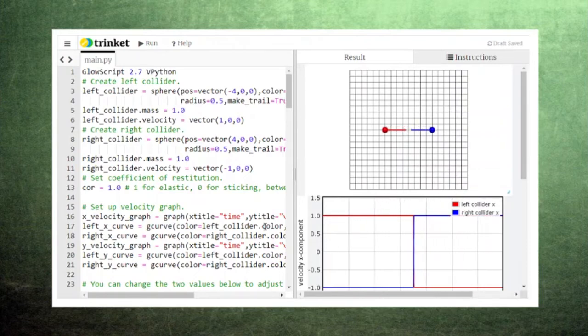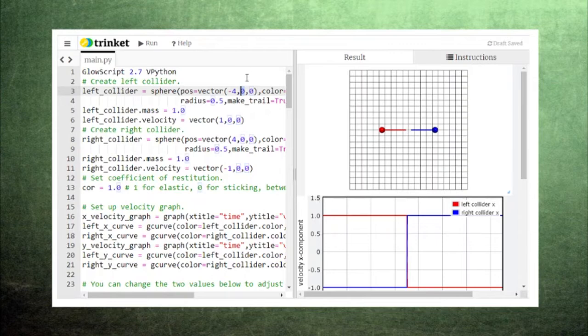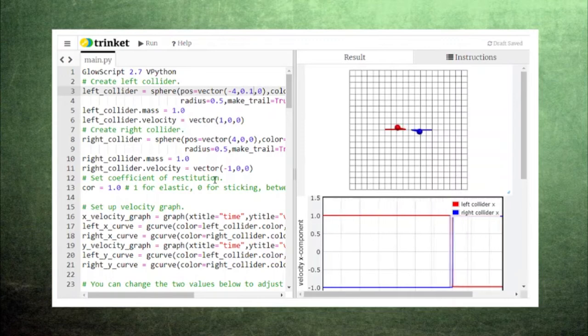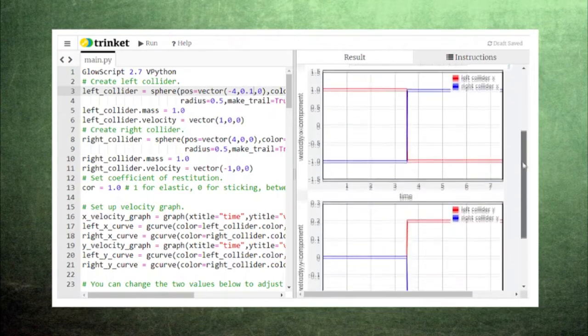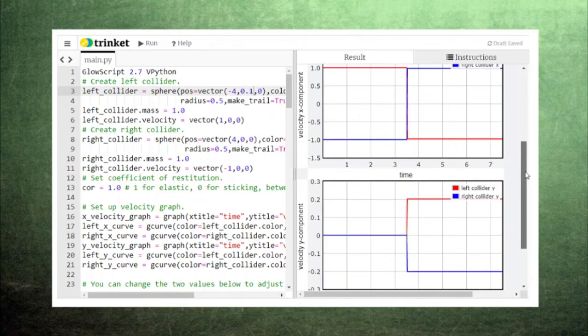Sure enough, they simply bounce off in the opposite directions. Now let's try moving the left collider up just a little bit so that the colliders strike each other at an angle. Now when they bounce off of each other, they move away at a slight angle.